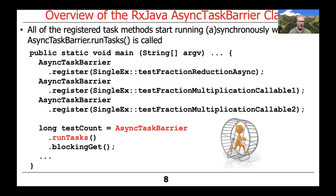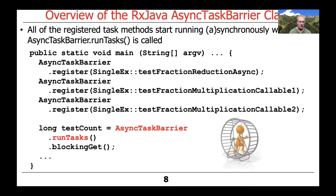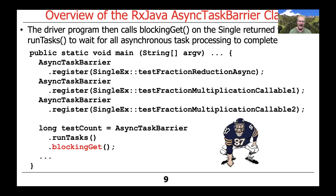We register all those method references and then call async task barrier run tasks, which is a static method that starts up all the processing. After starting all the wheels in motion, we call blocking get. Note the slight difference: Project Reactor has a method called block, while RxJava has blocking get — they work more or less the same way but have different names. Blocking get blocks the calling thread while all those other computations run in the background asynchronously.